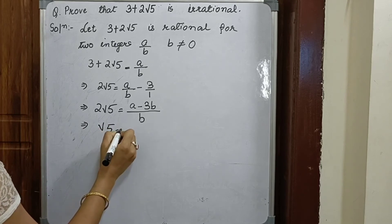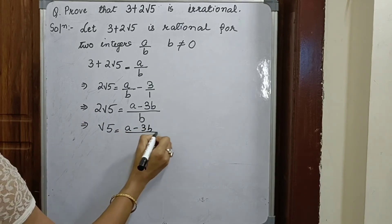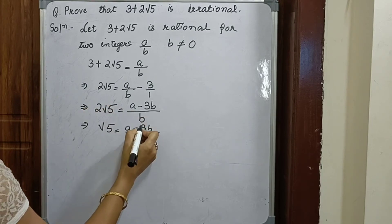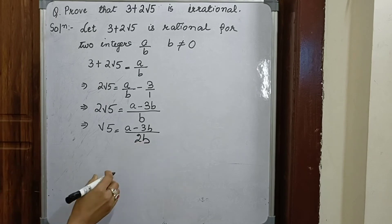Root 5 equals a minus 3b. The 2 will come to the right hand side and it becomes division 2b. Now we can see that a and b both are divisible by 2, which has a common factor 2.